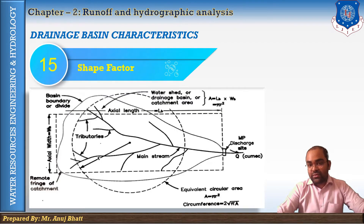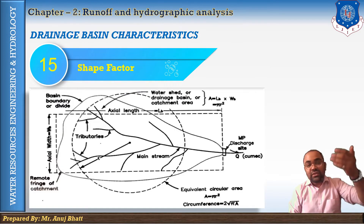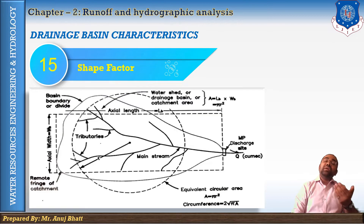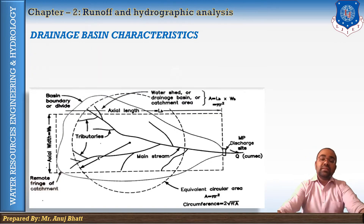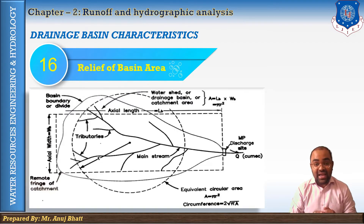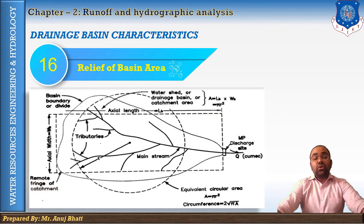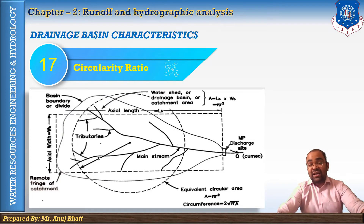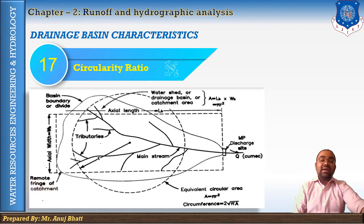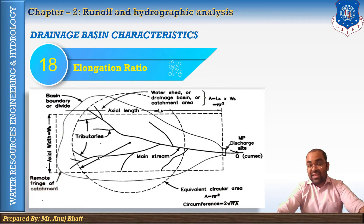Shape factor is the ratio of the square of the basin length to the basin area — it is dimensionless. The next is relief of the basin area, defined as the difference in elevation between the highest point on the reach and the basin outlet. The circularity ratio is the basin area divided by the area of a circle whose perimeter is equal to the length of the ridge line.